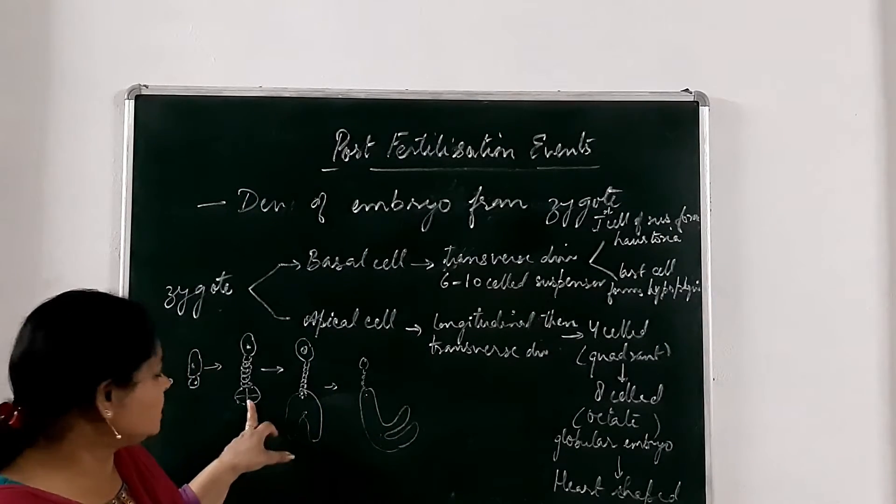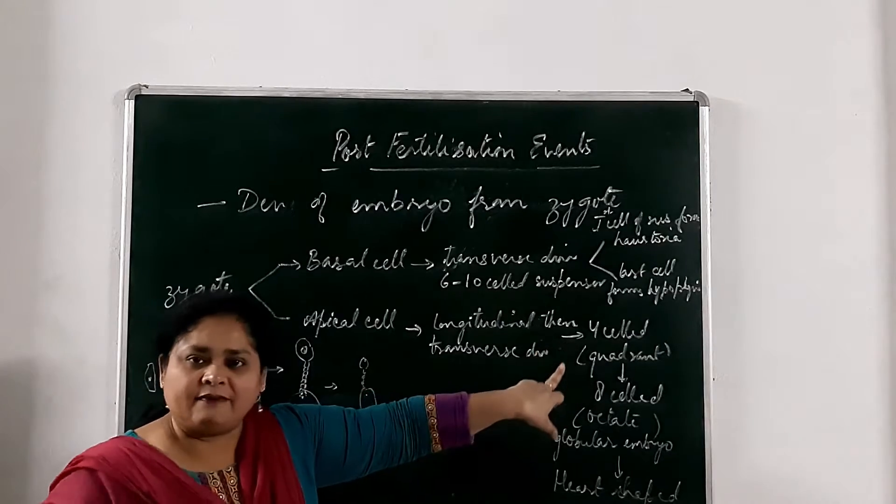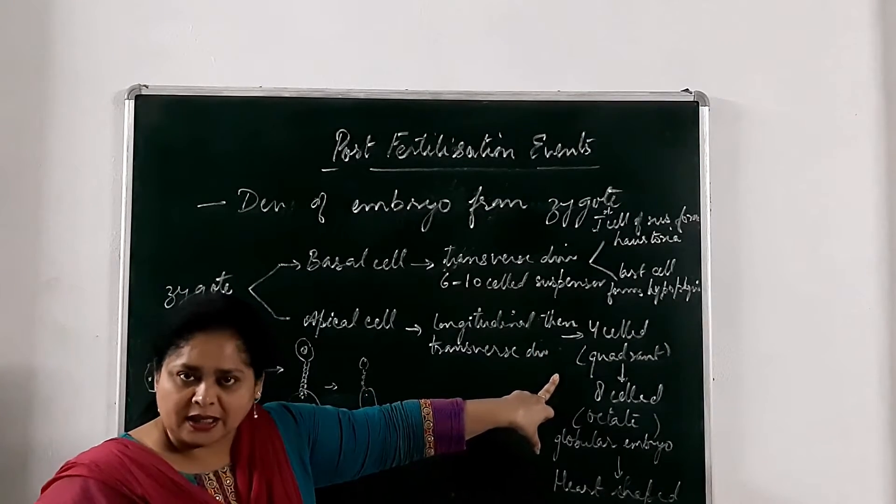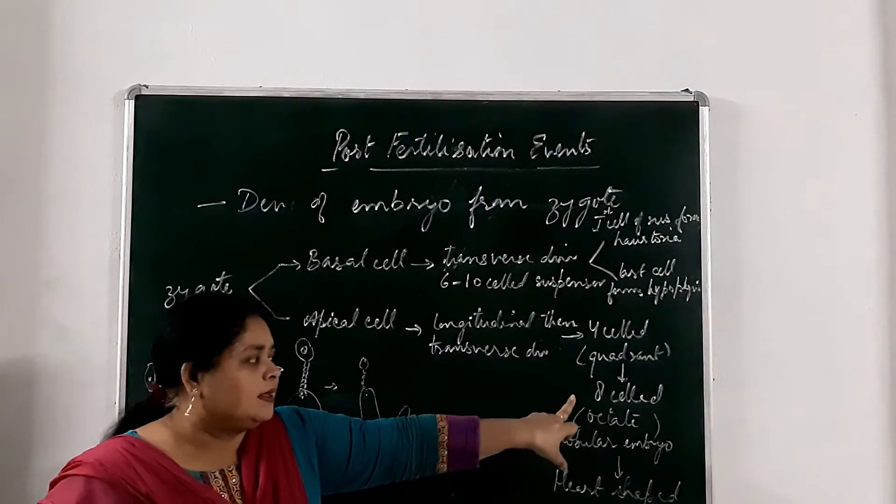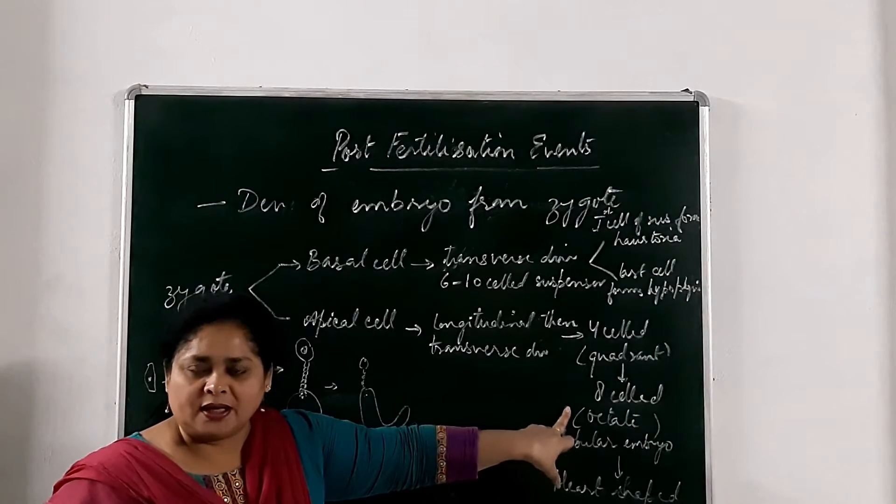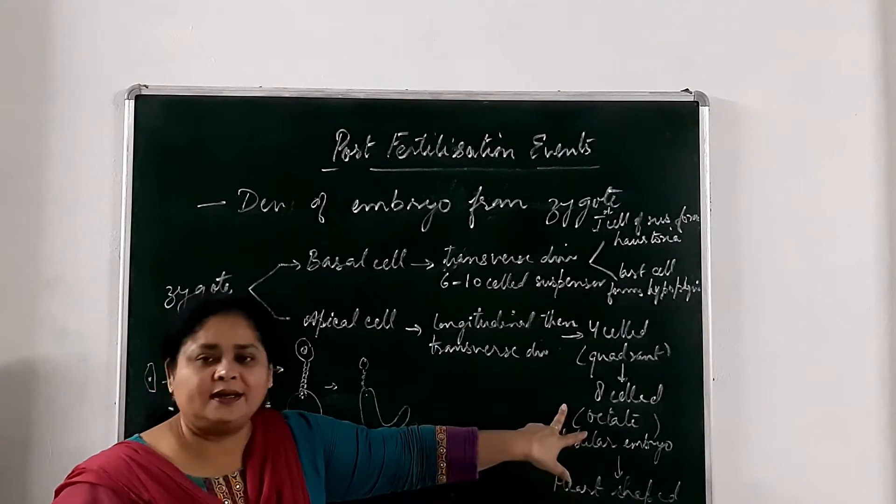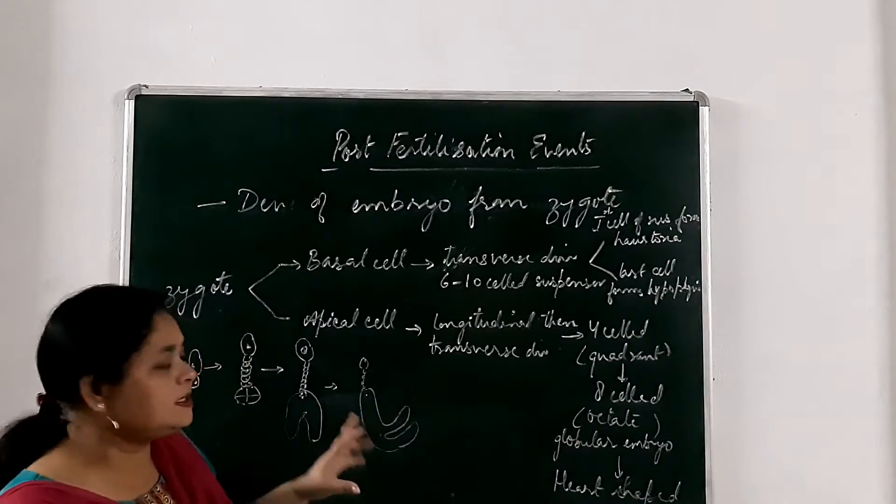Then after this quadrant stage, again these 4 cells, they will divide transversely in apical cells. And they will become 8 cell body. Now this 8 cell body is known as octant stage.